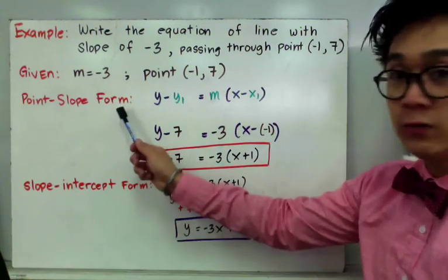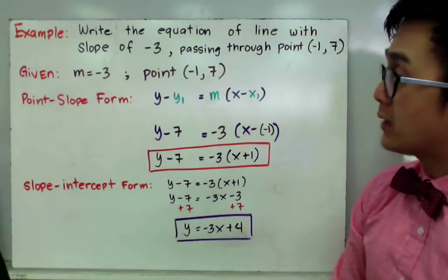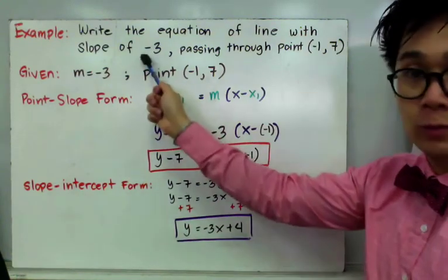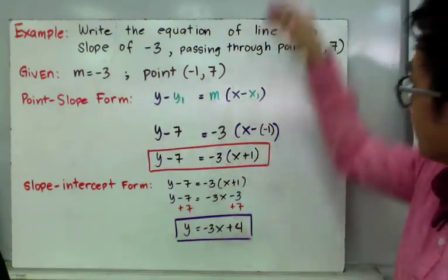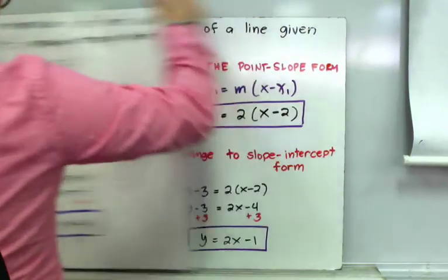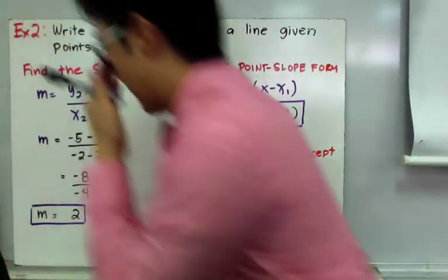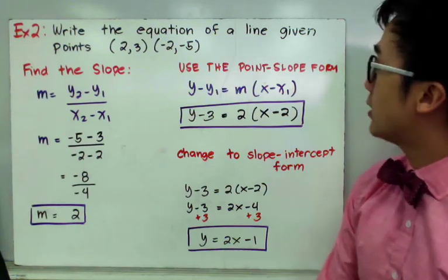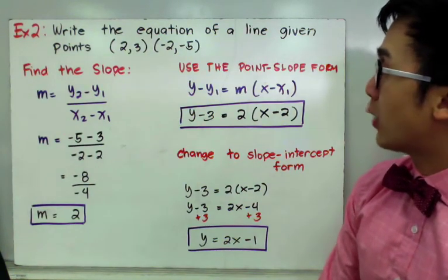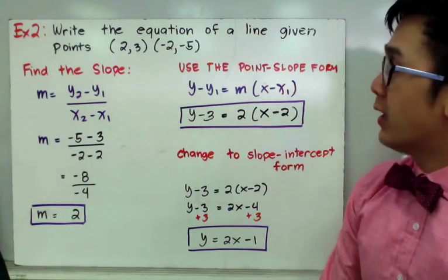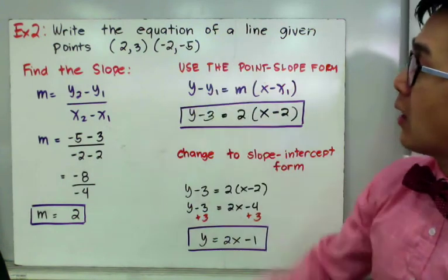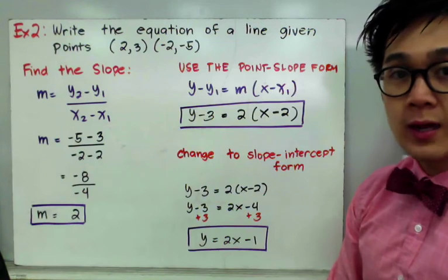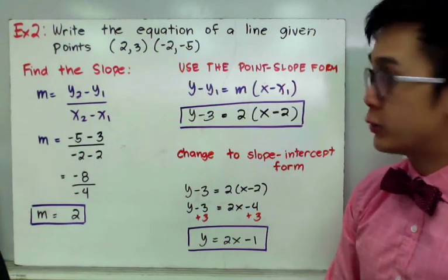That is how we use the point-slope form to write the equation of a line given a point and a slope. For example number 2, we need to write the equation of a line, but this time we are only given 2 points. In this case, what we need to do is find our slope using the slope formula given 2 points.